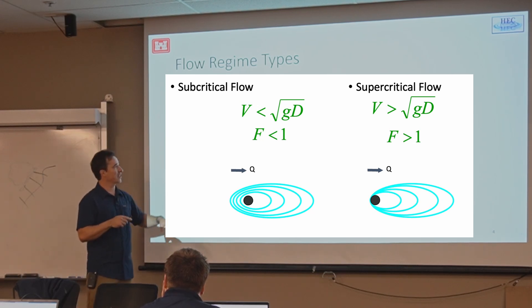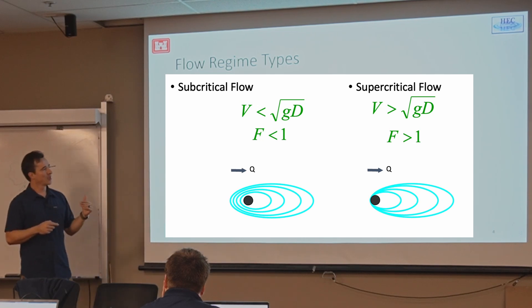And theoretically, the Froude number threshold is one. But in real life, we use, actually, in RAS, we use 0.94. And the reason for it is because once you start getting close to the Froude number, the flow becomes very unstable, and it just takes a very small disturbance in the flow to trigger that supercritical flow. And then your hydraulic conditions change very quickly.